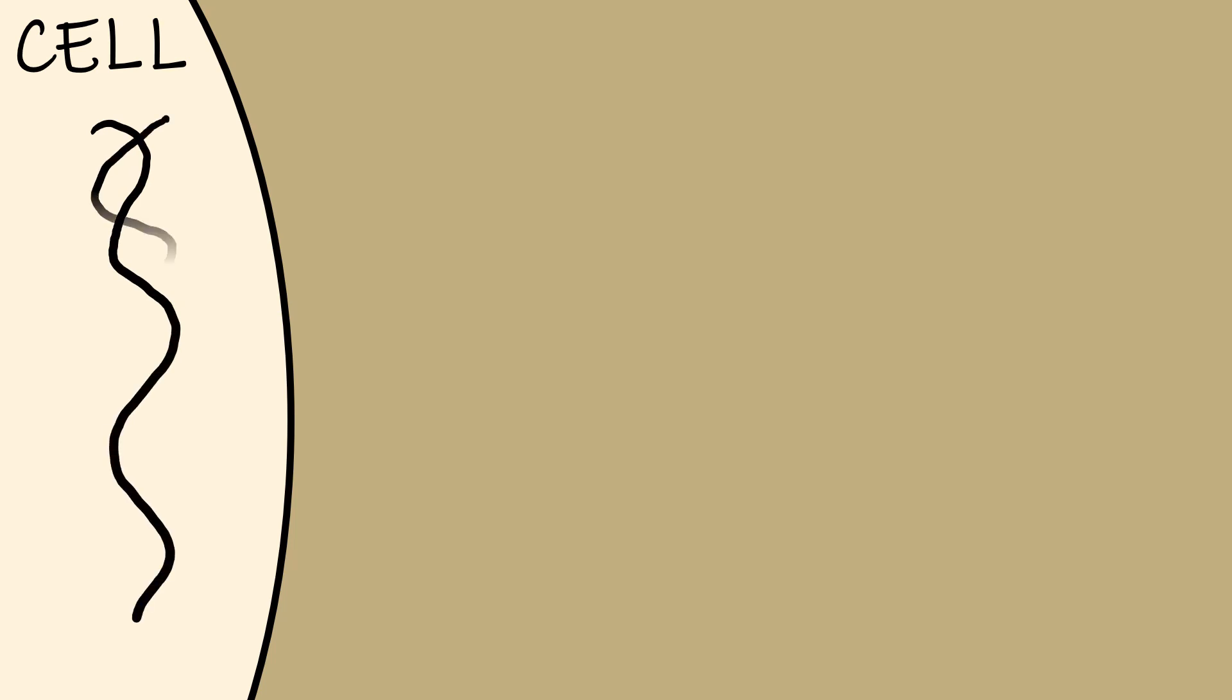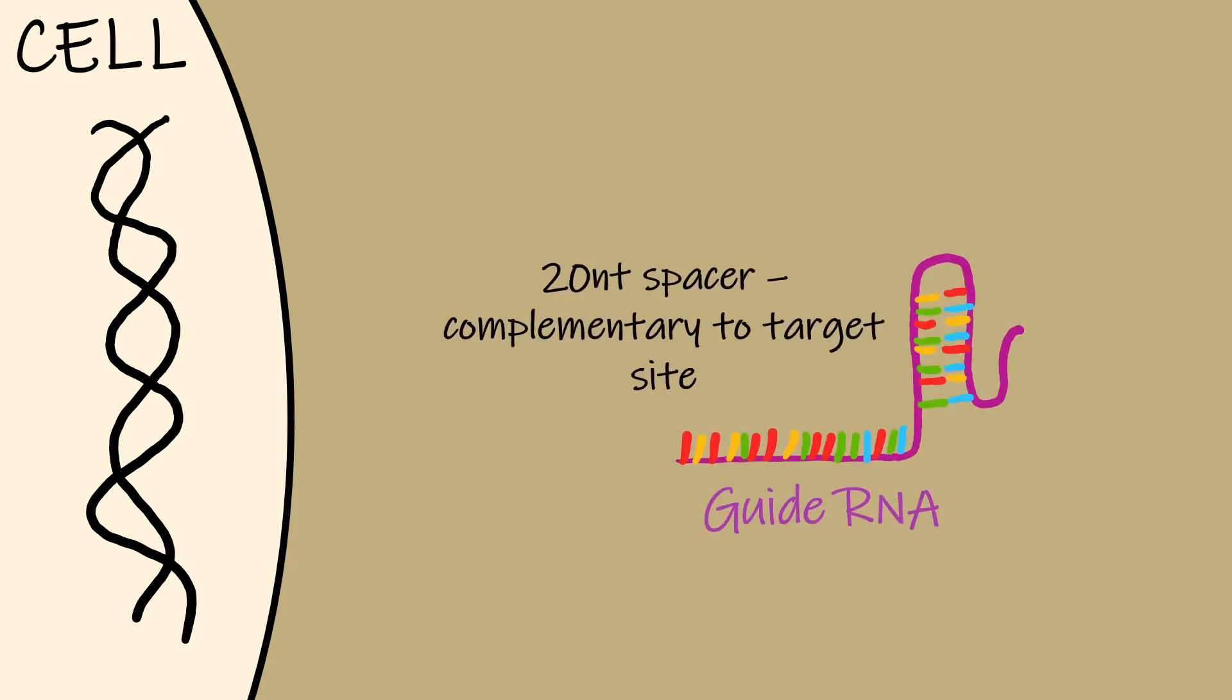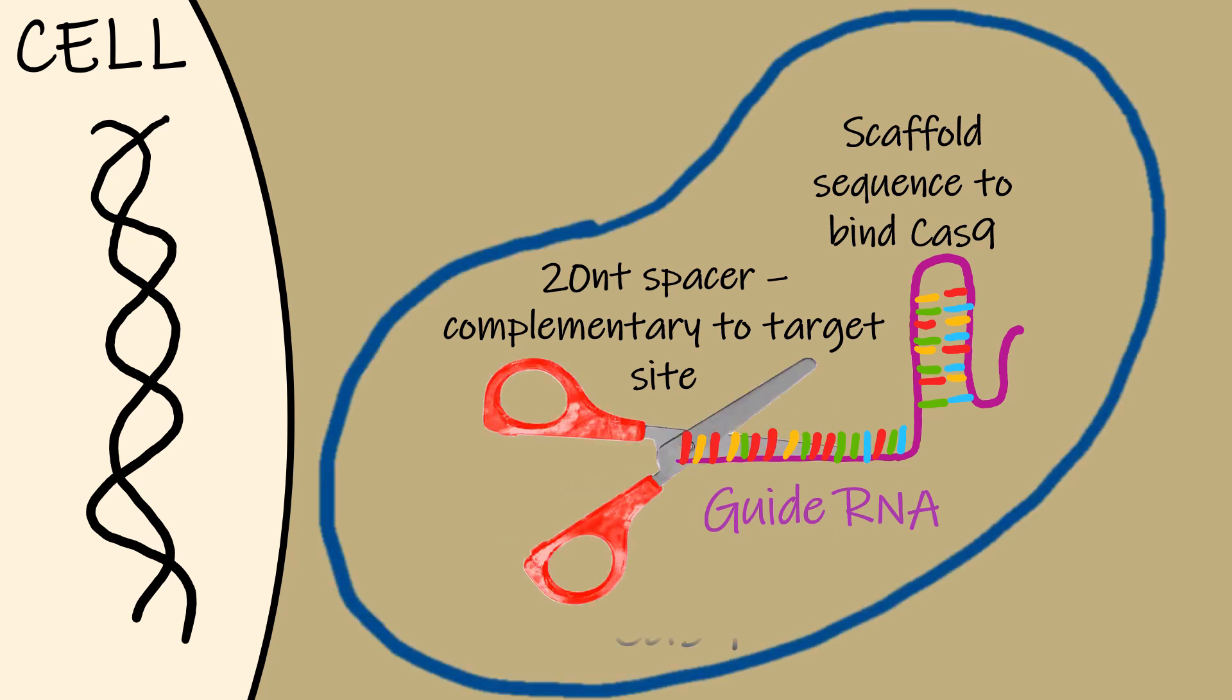Scientists first select a gene they want to target and then they design a short synthetic guide RNA which consists of two parts: a complementary 20 nucleotide sequence for the target DNA and a scaffold sequence that can bind to the Cas9 protein. The target site can be easily modified by changing the complementary spacer sequence in the guide RNA.